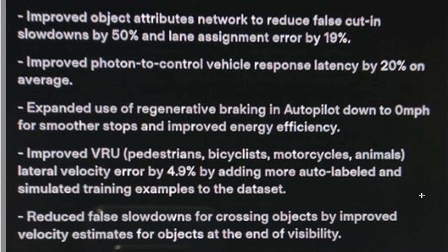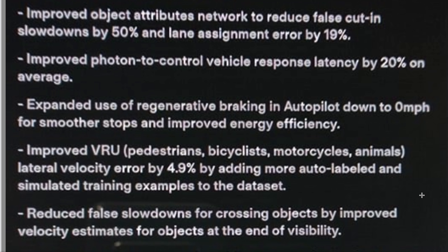We have improved object attributes network to reduce false cut-in slowdowns by 50% and lane assignment error by 19%. The object attributes network basically says: okay, I've identified something — now what is it? Essentially, the attributes network is telling the full self-driving controls whether or not to slow down in a situation where there might be a car going faster, or it might not even be a car. It's basically fixing the attributes issue.